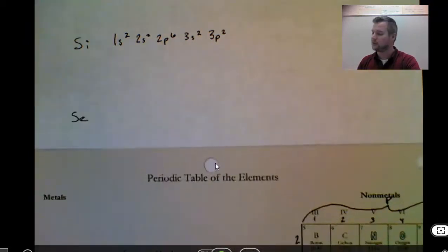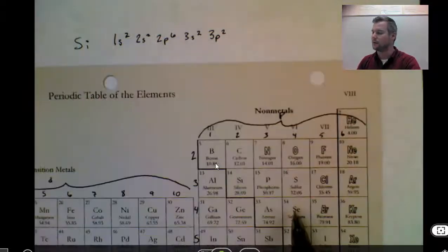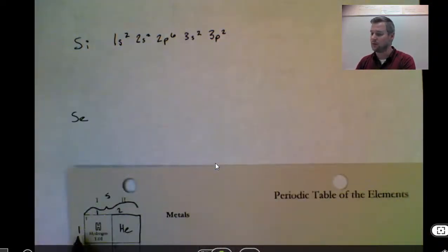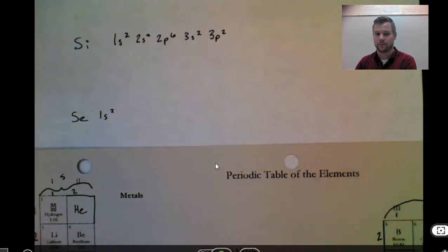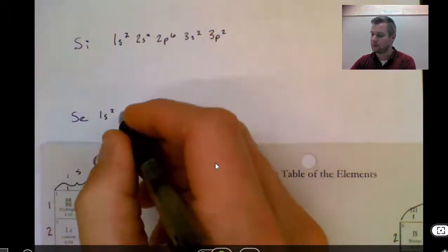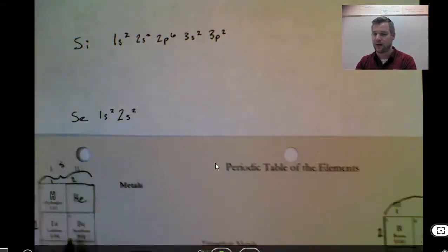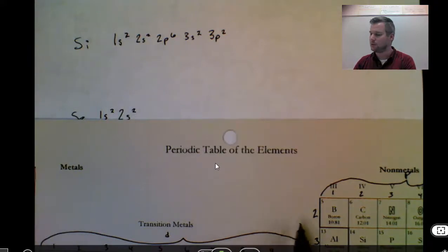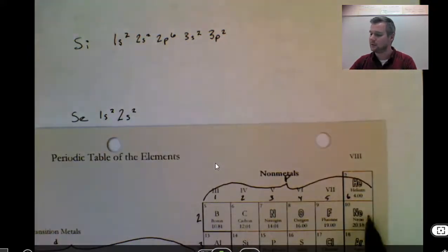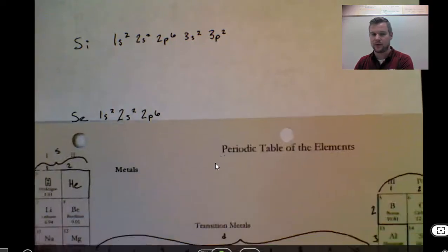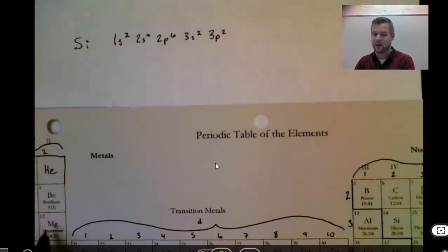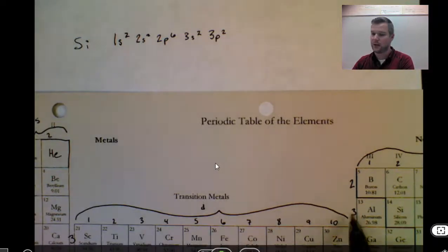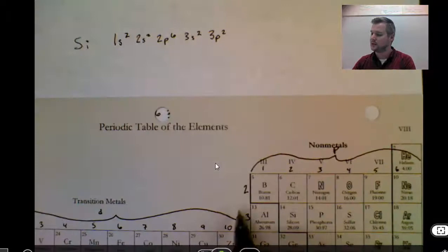You can also do one for selenium. Now selenium is way over here, so it's much further down. So I'm going to start again at hydrogen, 1s, 1 and 2. 2s, 1 and 2. We're in beryllium square. I can go further right. 2P6. Stopping at neon square. Back into the left. We're now in sodium square. 3s, 1 and 2. So that's magnesium.